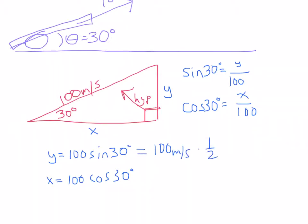I know the cosine of 30 degrees is equal to the square root of 3 over 2, and that gives us, for both of these, this one is 50 meters per second. Doing some calculations with the square root of 3 over 2 gives us 86.6 meters per second.